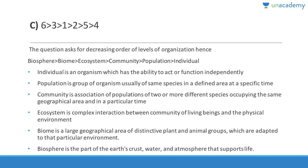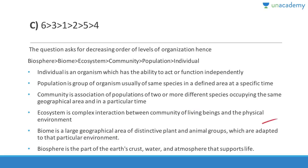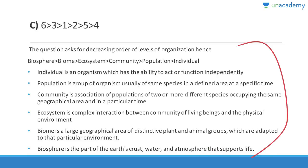The answer is C. Individual is an organism, population is a group of organisms, community is an association of populations of two or more species, ecosystem is a complex interaction between a community of living beings and the physical environment, biome is a very large geographical area of distinctive plants and animal groups adapted to a particular environment, and biosphere is the part of earth's crust that supports life.